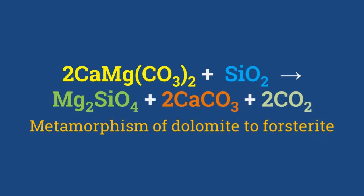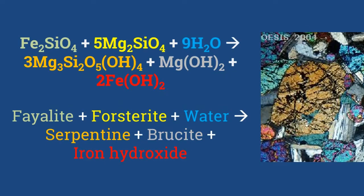Forsterite is mainly found through the metamorphism of impure dolomite, and this process is also called dedolomitization, as seen in forsterite marbles. Another reaction in which olivine takes part is serpentinization.